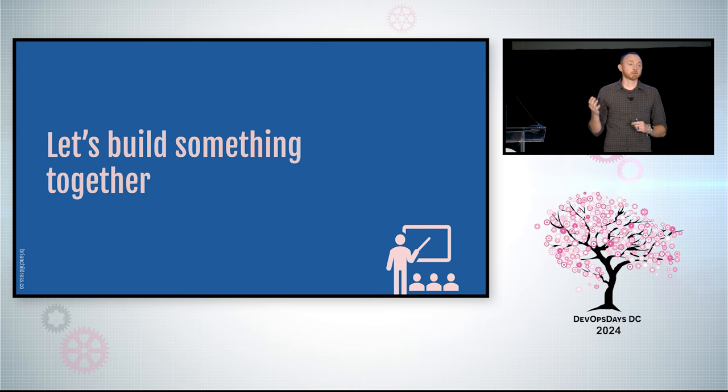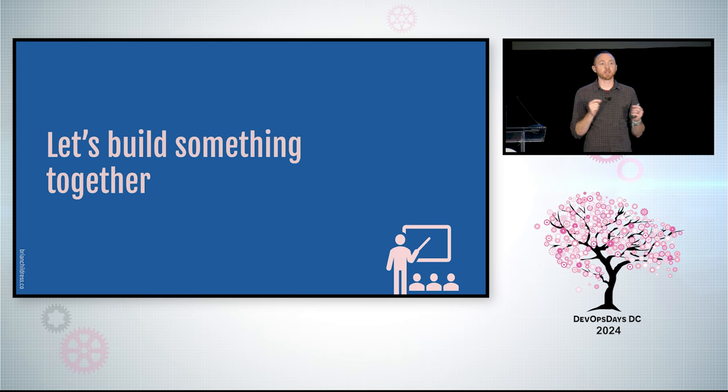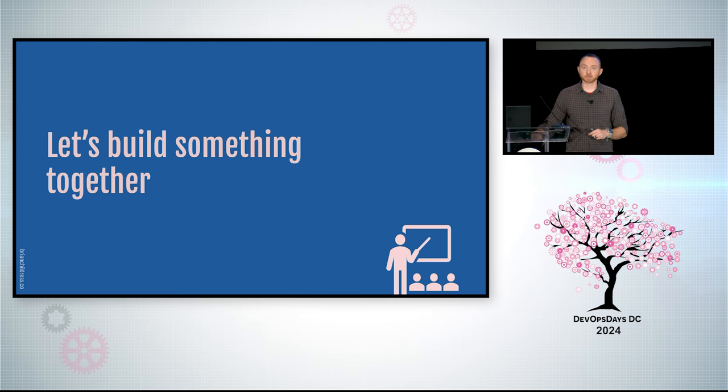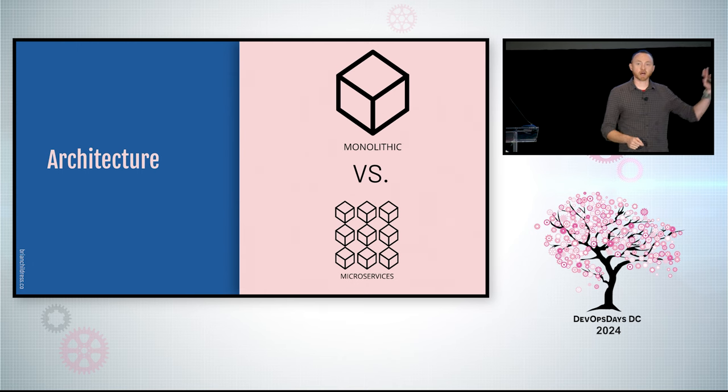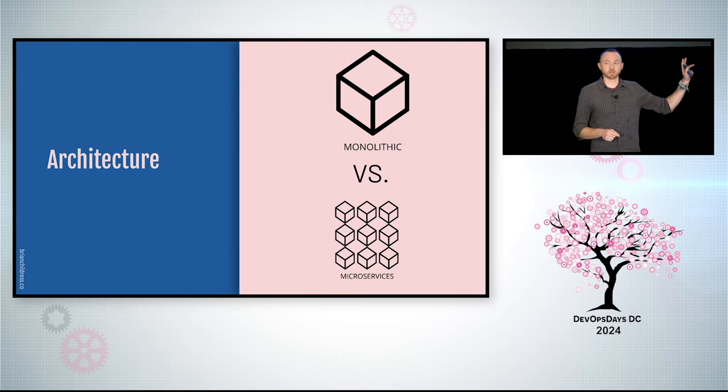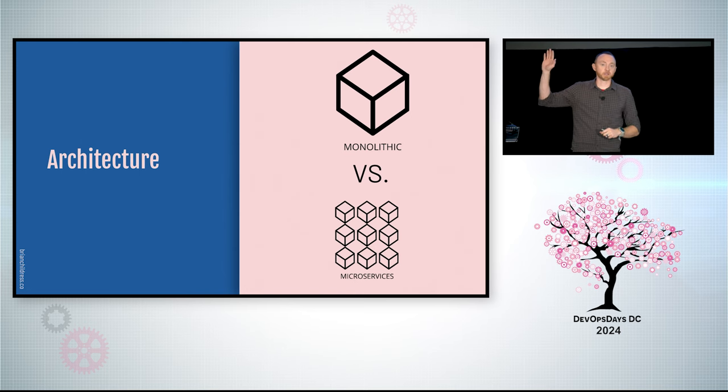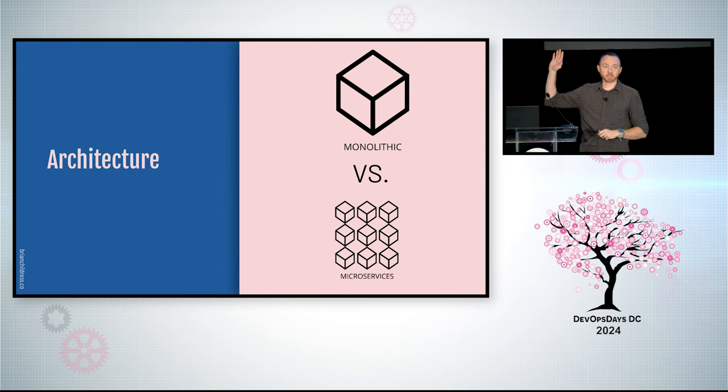It's going to require some participation. I want you to raise your hand for the option that most speaks to you. We've got to pick an architecture. Where are my monolithic fans? Who loves a good monolithic architecture? Microservices. We're going to build it for scale. Might as well start from the beginning.